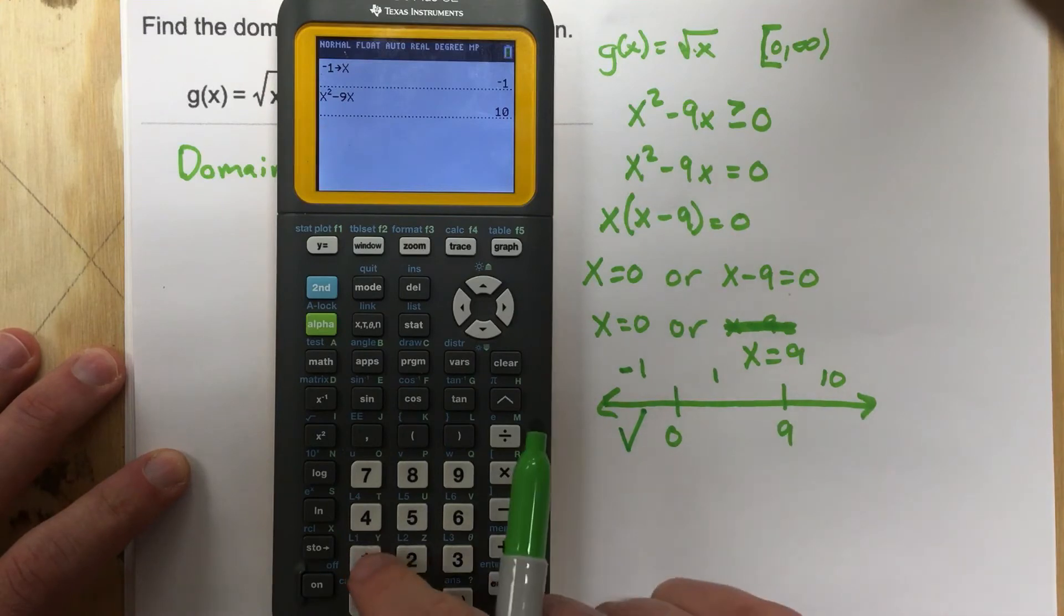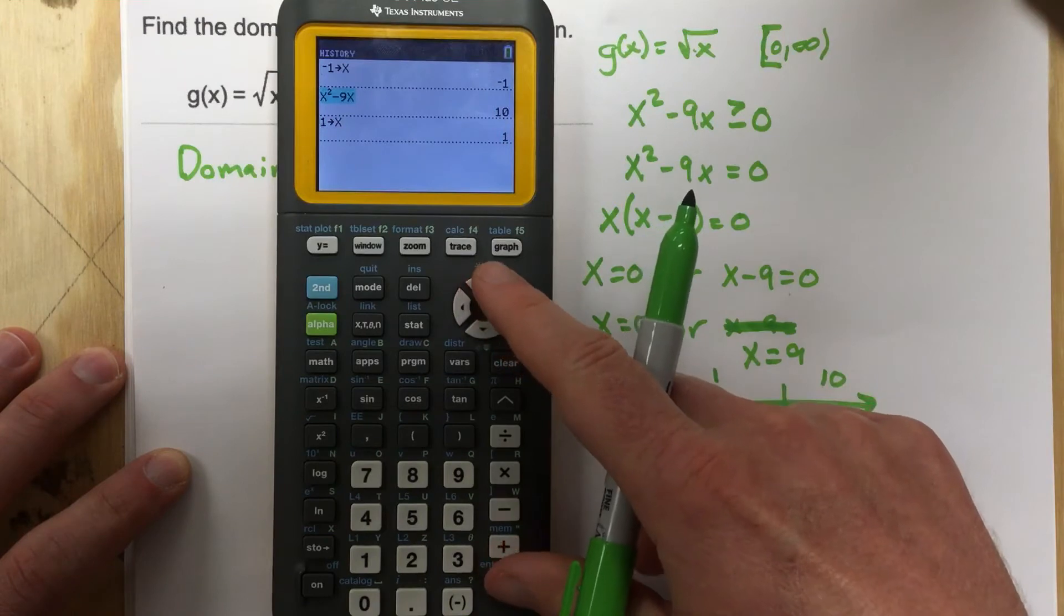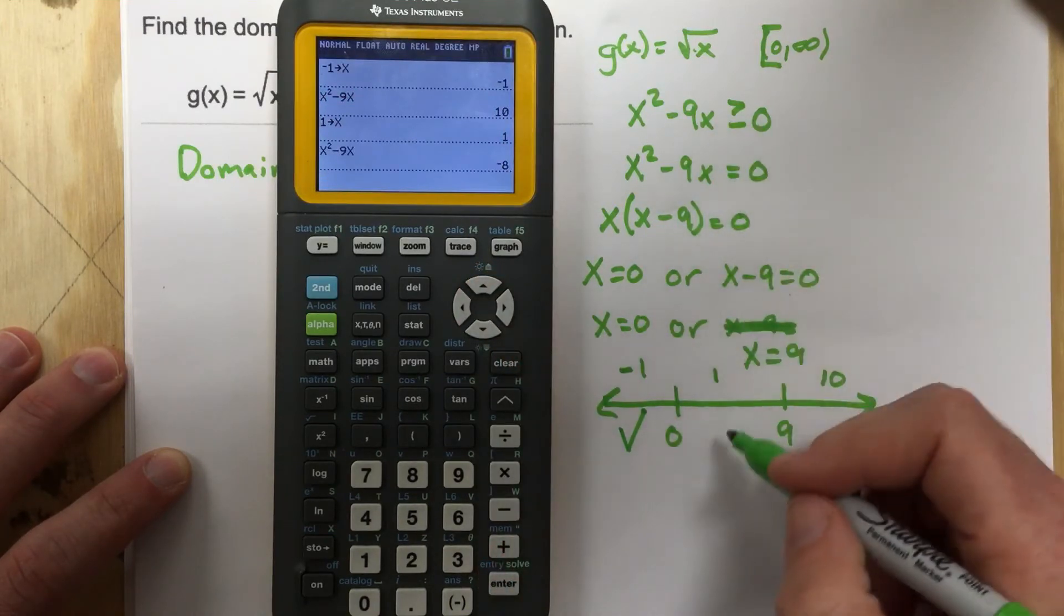I check 1. So I say 1 stored as x. Grab the function. I get negative 8. Is negative 8 greater than or equal to zero? No.